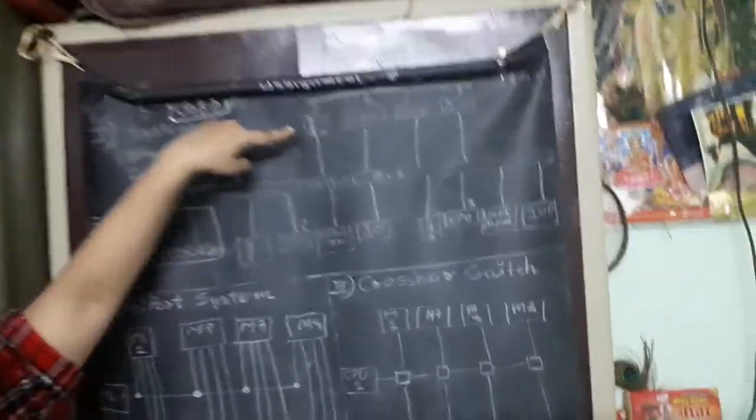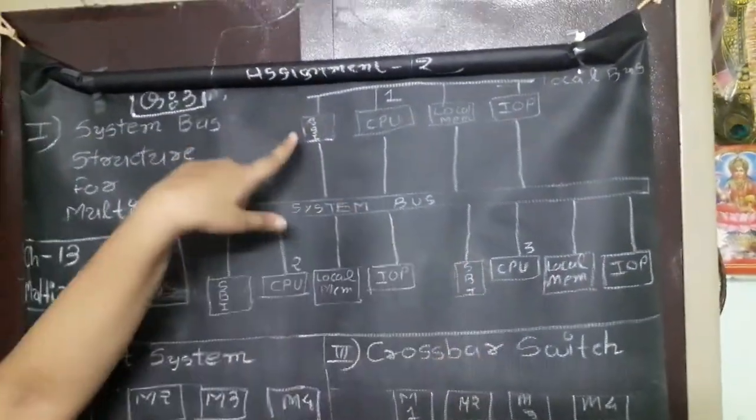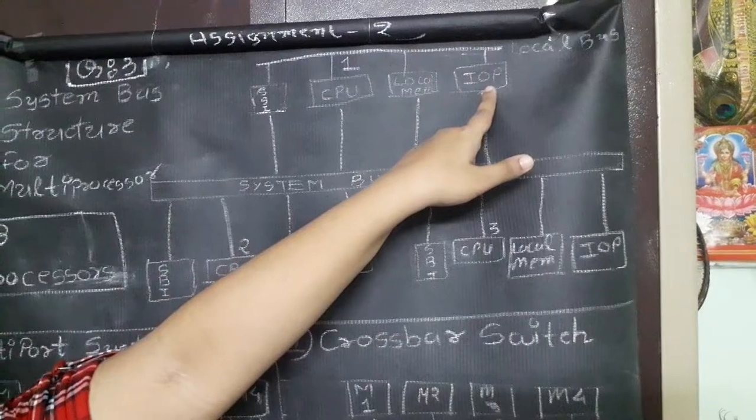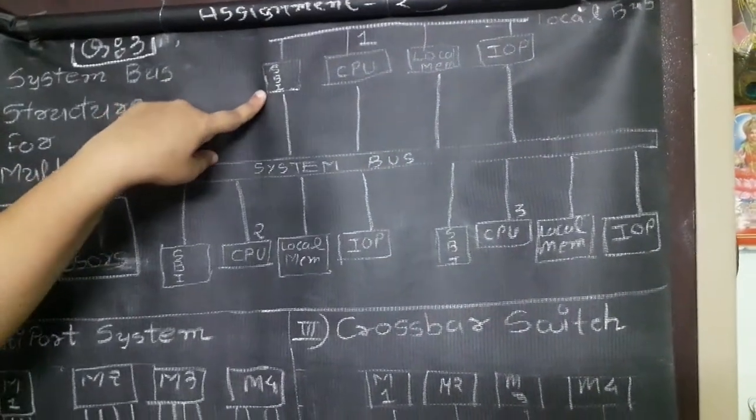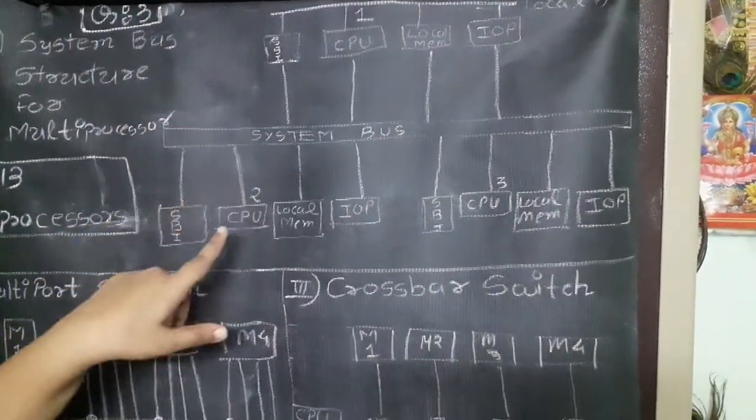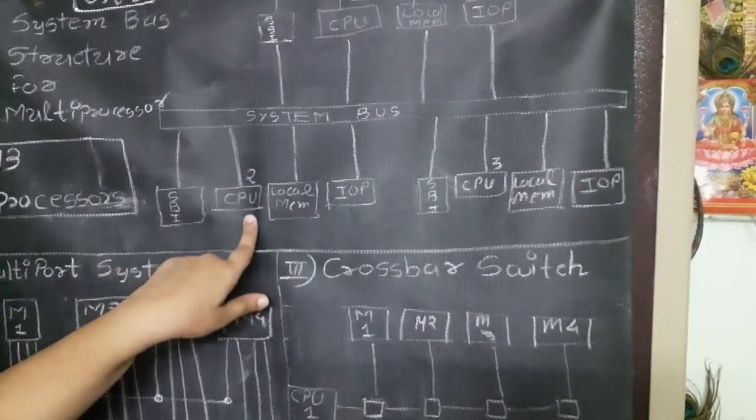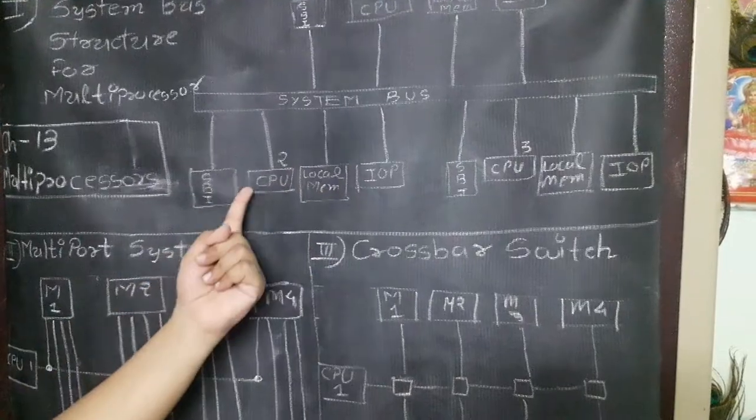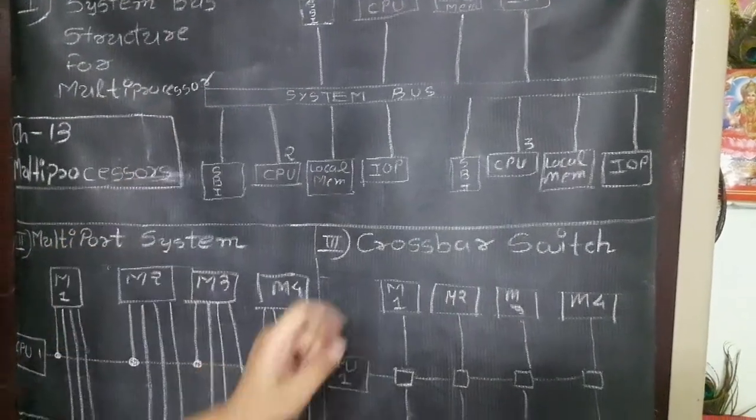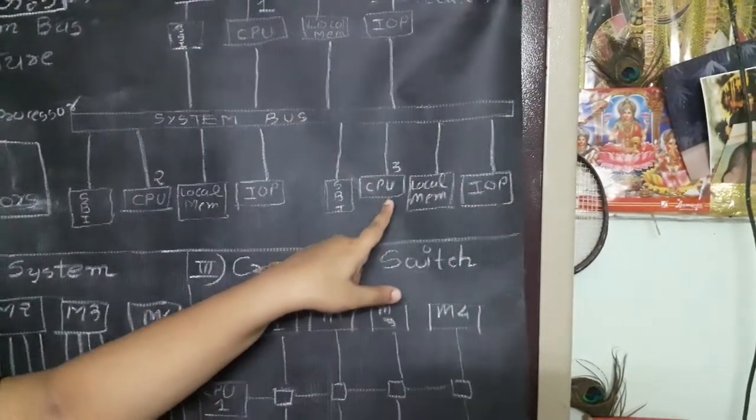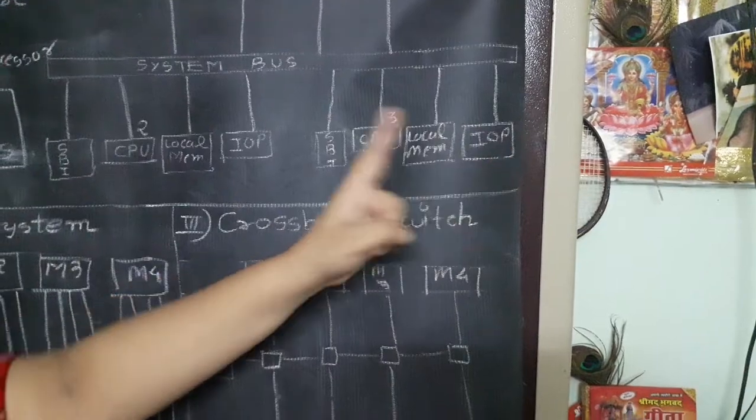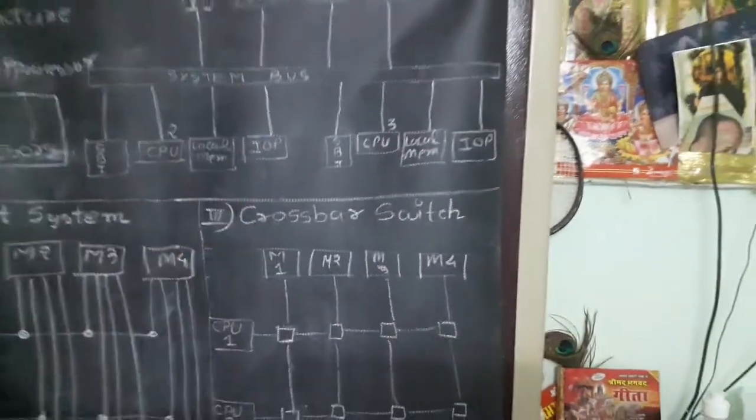You can see in the diagram, we have 3 setups. Very first is the CPU number 1. It is available with its local memory. It is having one input-output processor and it is having this system bus interface, that is SBI. This is one set of processors. There is a second set of processors available in the same motherboard: the CPU, second CPU, the local memory of second CPU, input-output processor for the second CPU, and the system bus interface for the second CPU. Similarly, there is a third entity: CPU number 3, the local memory associated with it, input-output processor or controller with that CPU, and system bus interface SBI for that.